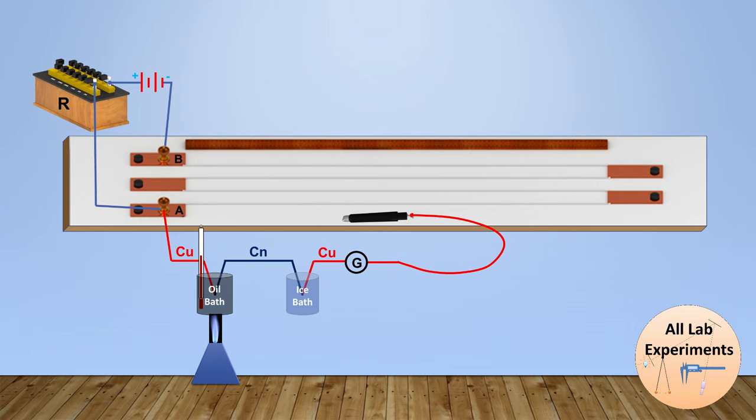In this way we can define hot and cold junction in this experiment. Take care of these hot and cold junctions, because if you switch them, the polarity of the EMF generated will also switch. So you should decide the hot and cold end in this experiment carefully according to this diagram.